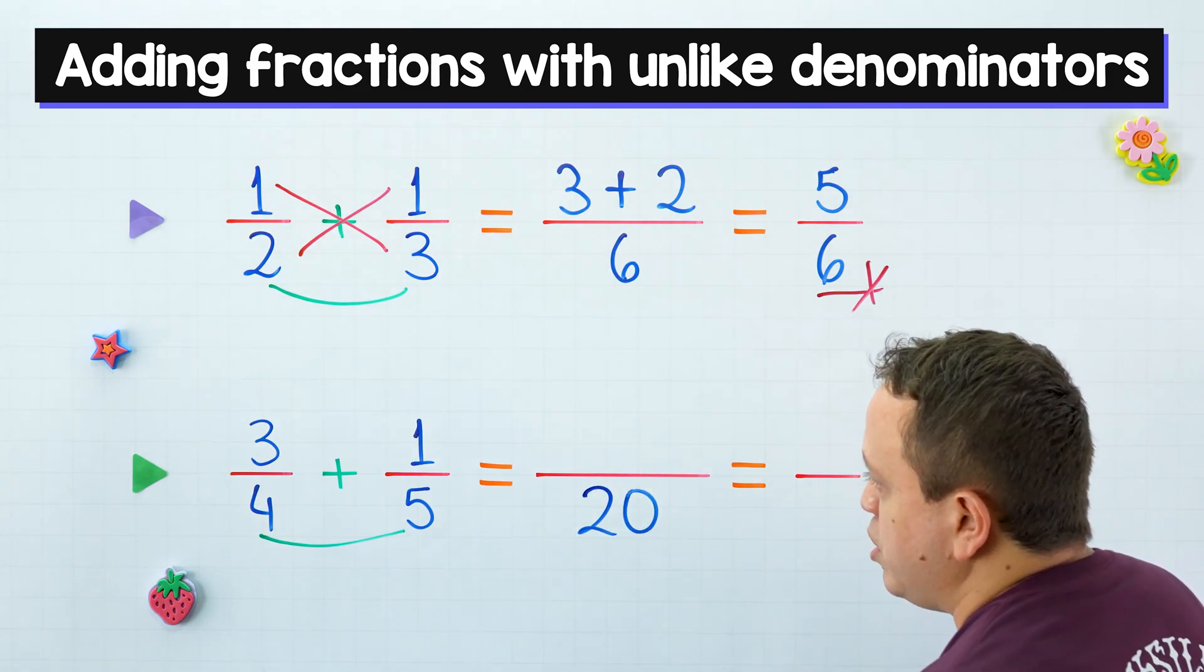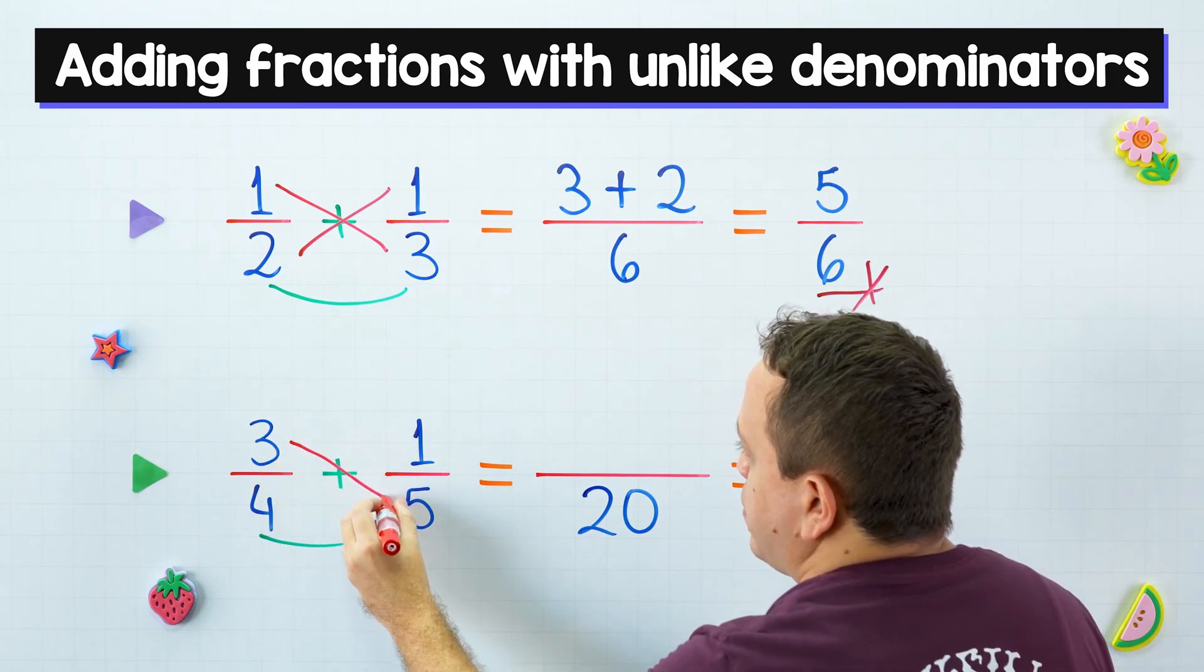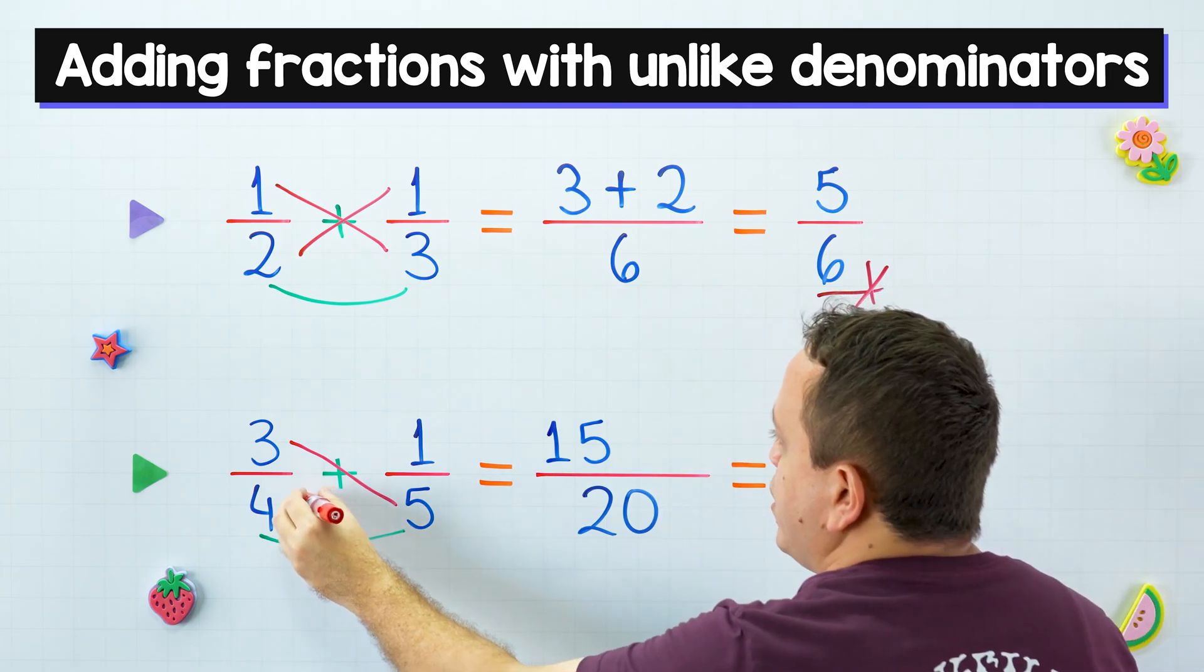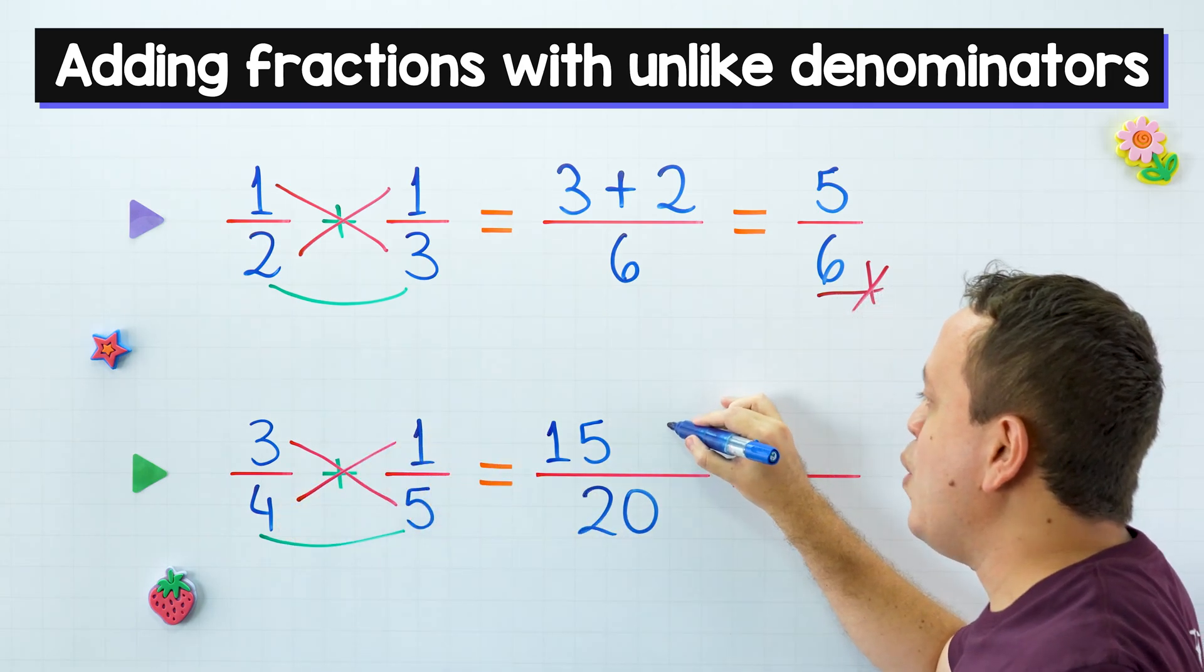And here comes the cross multiplication. Three times five, three times five equals 15. And then four times one, four times one equals four.